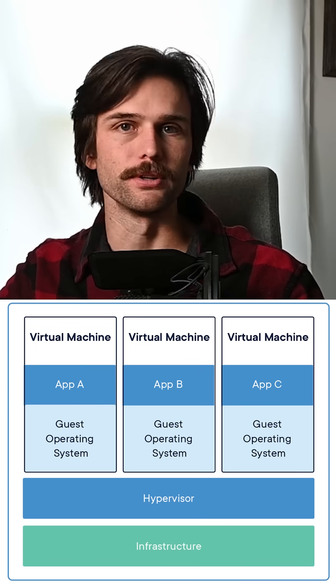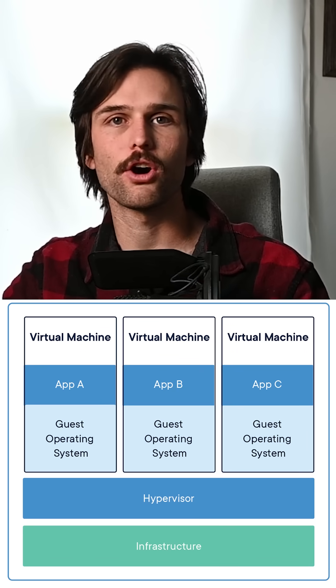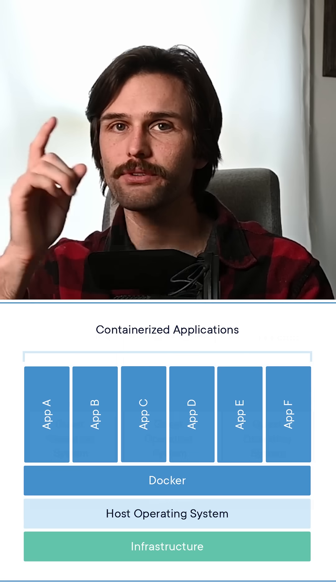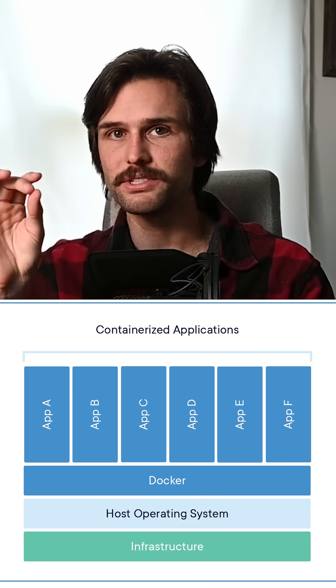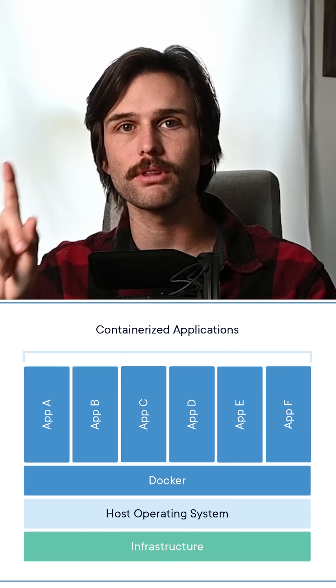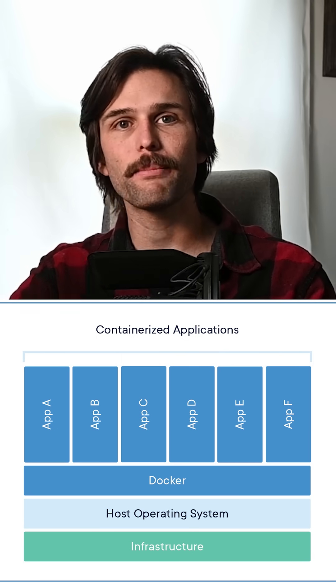This used to be done via virtual machines, or VMs. They create entire virtual computers, including the hardware and the operating system. Docker does things differently though — instead of virtualizing everything, it only virtualizes the operating system. Just that layer, no hardware requirements, which makes it less bulky and faster.